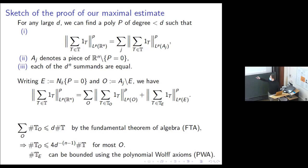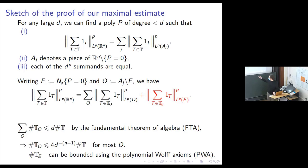Either this wall term is bigger than this cells term or vice versa. We call the case when the cells term is bigger the non-algebraic case, and the other the algebraic case. In the non-algebraic case, we throw the wall term away because the cells term is bigger. We also throw away the small cells so that now these are all roughly the same size again, and also throw away the ones where the cardinality bound is not satisfied.